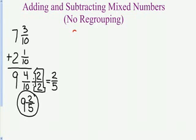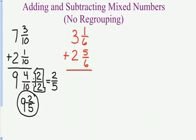Next example, 3 and 1 sixths plus 2 and 5 sixths. This one's a little trickier. Look at my fractions. I add 1 sixths plus 5 sixths and I get 6 sixths. 3 plus 2 is 5. Now, the 6 sixths is actually equal to 1 whole.